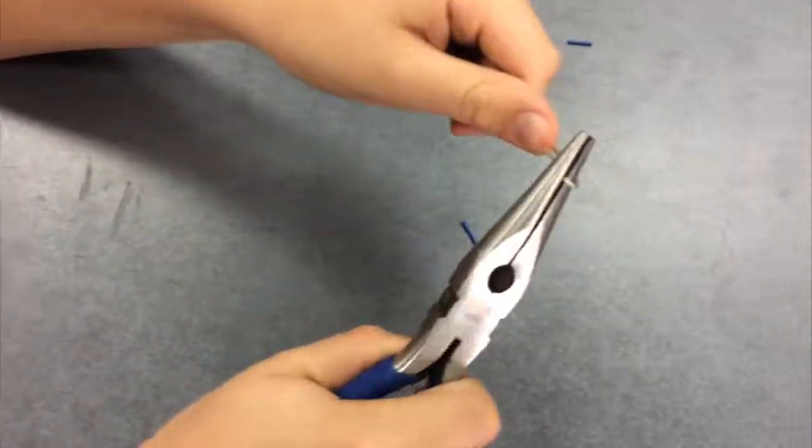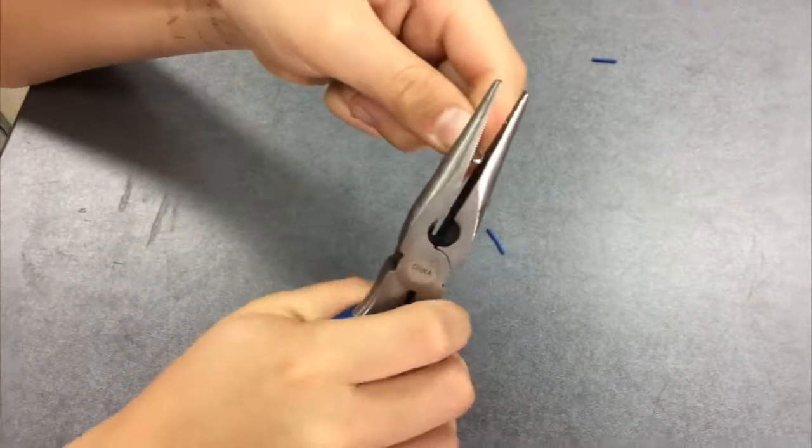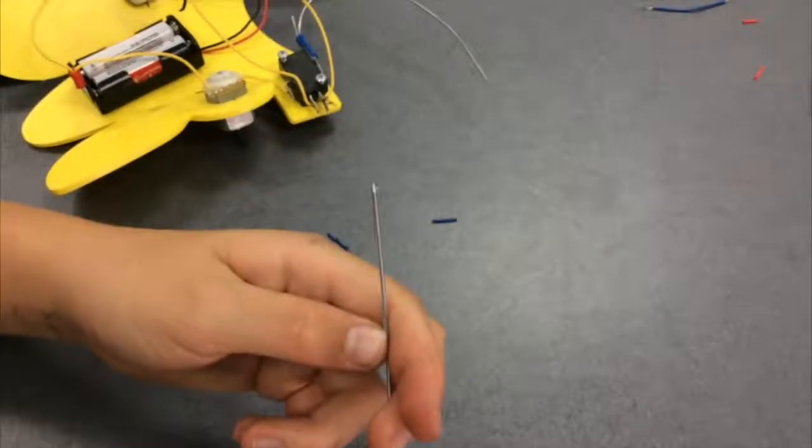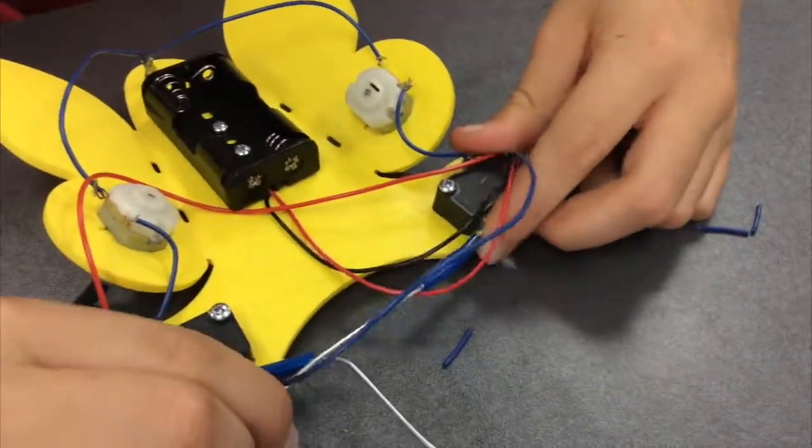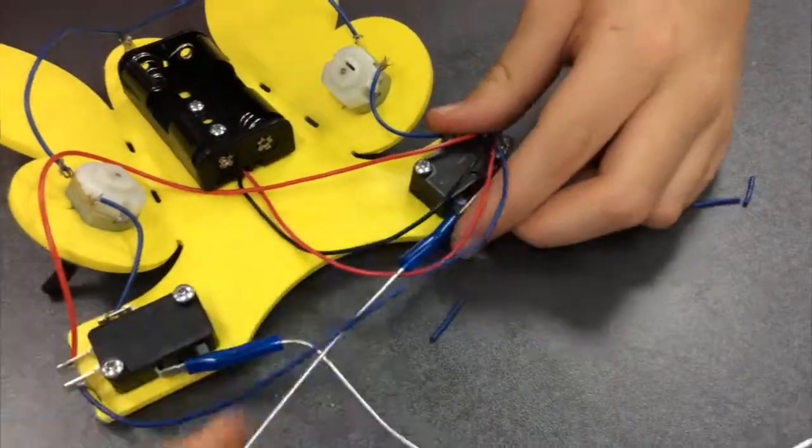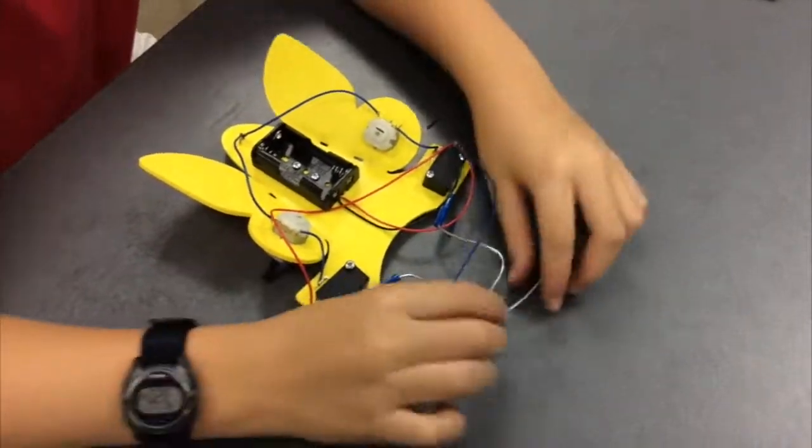Now, bend the wires to make the antenna for your robotic butterfly. Now, use a blue piece of plastic tubing to connect the antenna to the switch. The antennas of your butterfly should have this general shape.